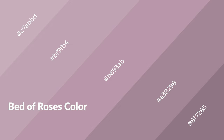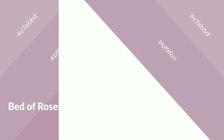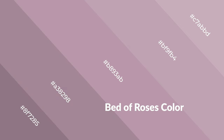Bed of roses is a warm color and it emits cozier and active emotions. Warm colors are symbols of warmth, fire, heat, and sunshine. They also evoke joy, passion, love, and even anger. You can see warm colors used in restaurants and gyms.